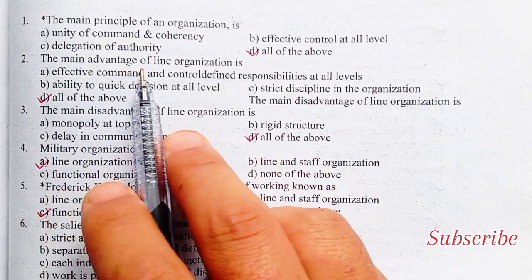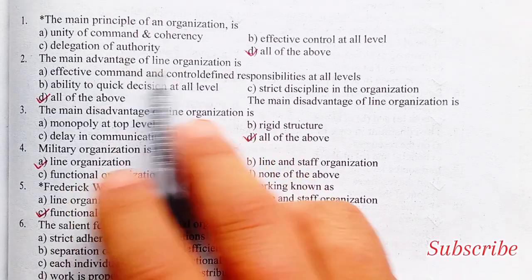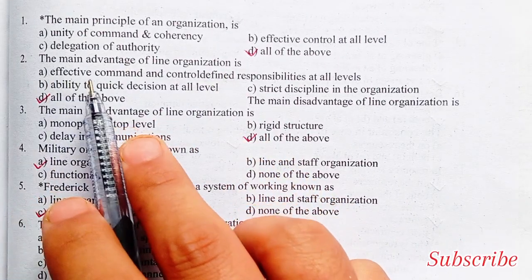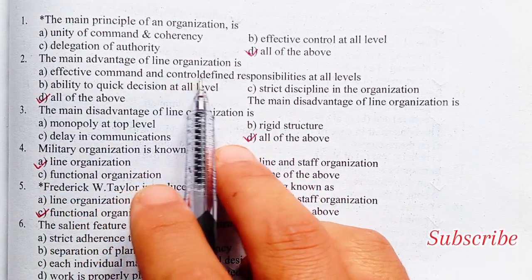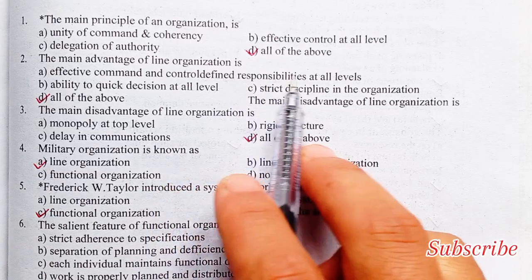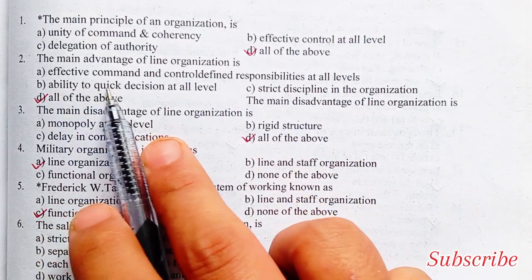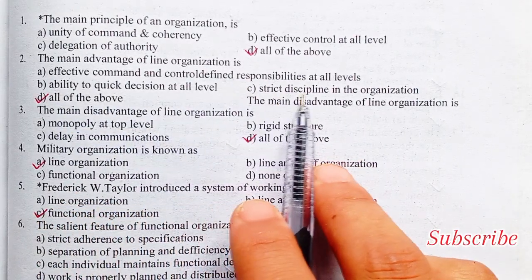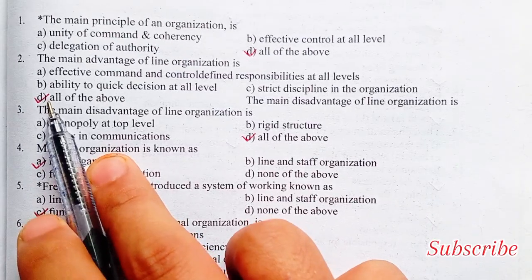The main advantages of line organization: effective command and control, defined responsibilities at all levels, ability to make quick decisions at all levels, strict discipline in the organization, all of the above.